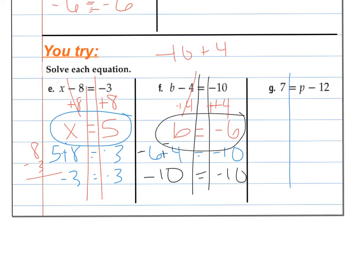Last one. Train tracks. P is being... You're taking 12 away from P to get to 7. So, let's put the 12 back on to find out what P was before you took it away. You end up with P is equal to 19. Double check. 7 is 19 minus 12. And that's true. Solution works.